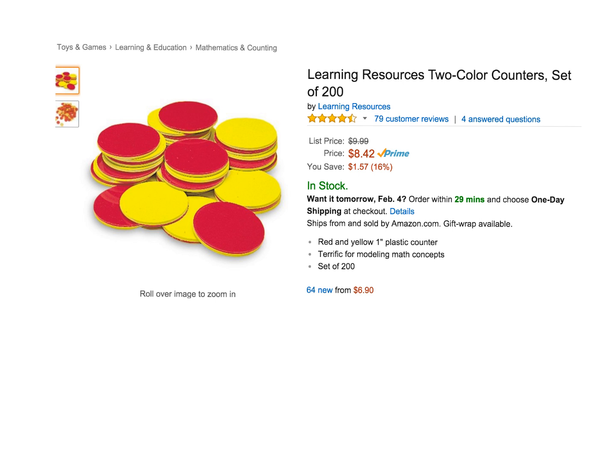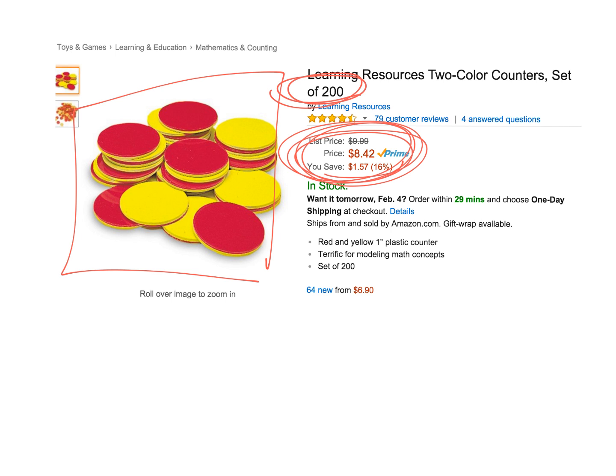An example of what I'm talking about, parents and teachers, is right here. I grabbed this straight off of Amazon.com. The idea is they're going to be selling you 200 poker chip or counter chips like this, 200 counter chips for eight dollars and 42 cents.